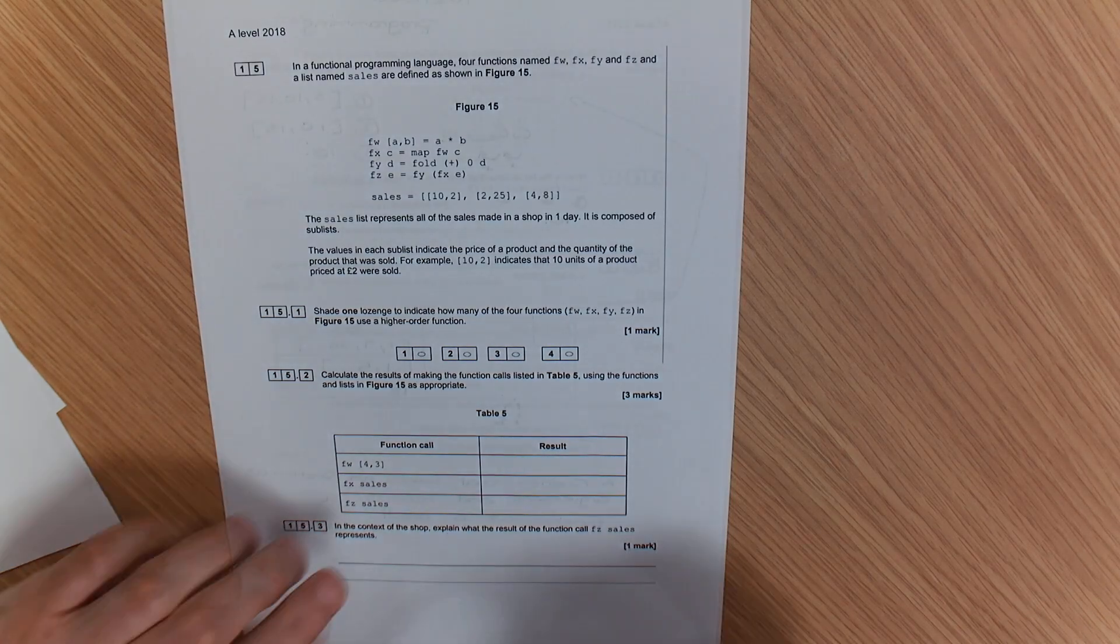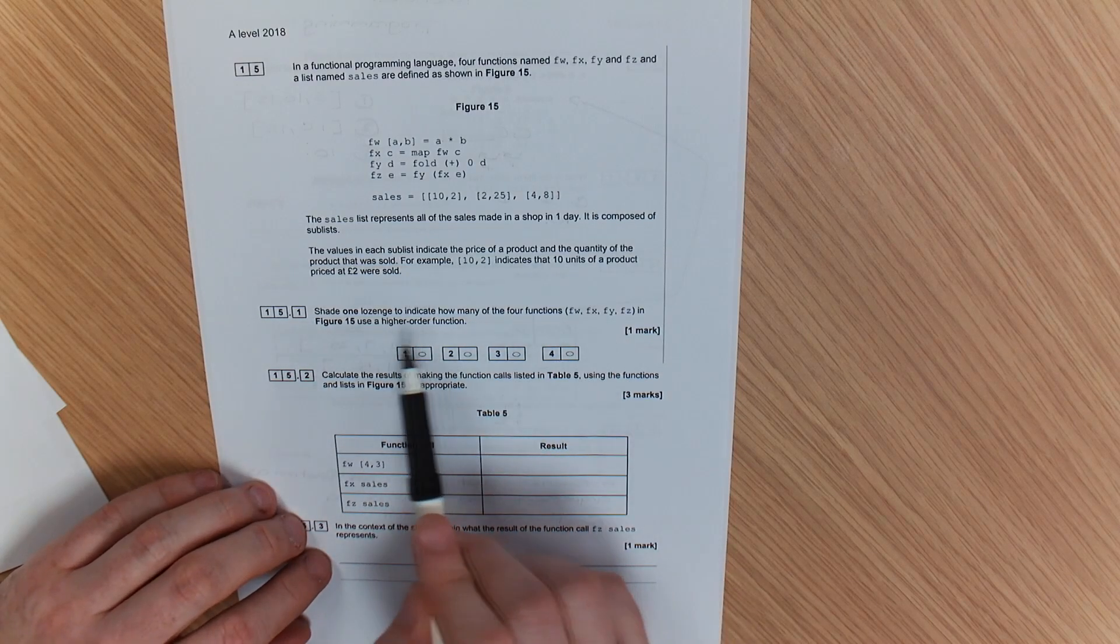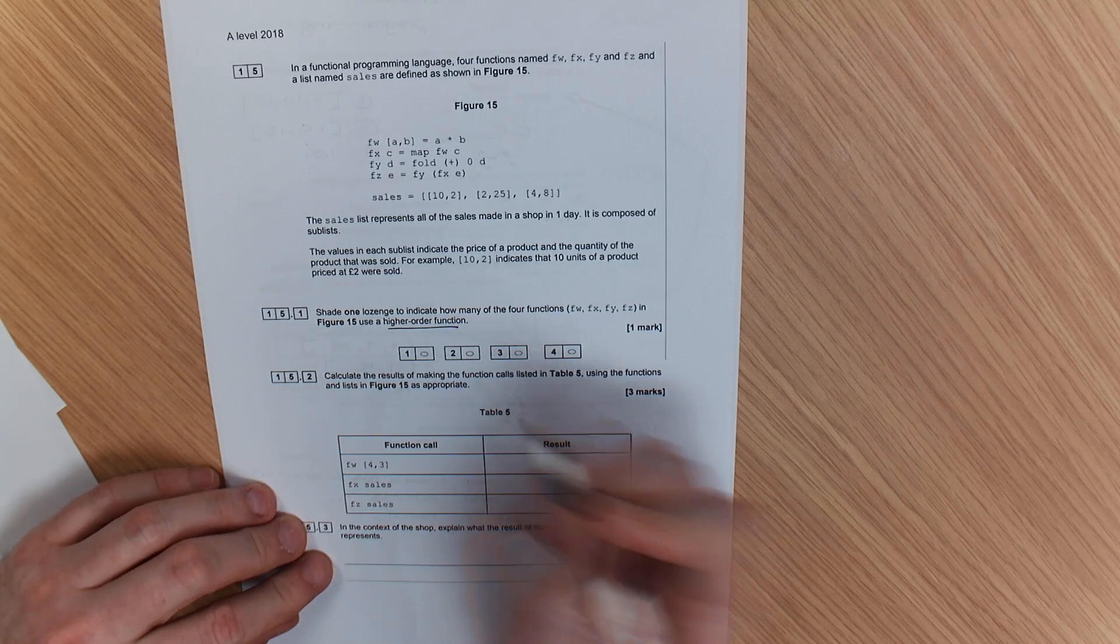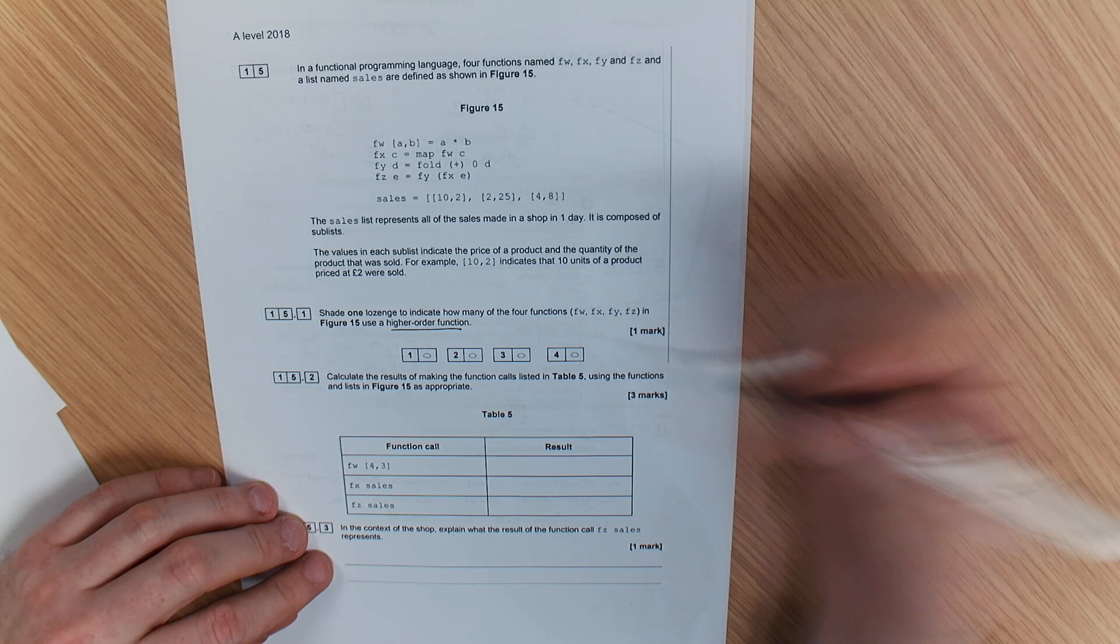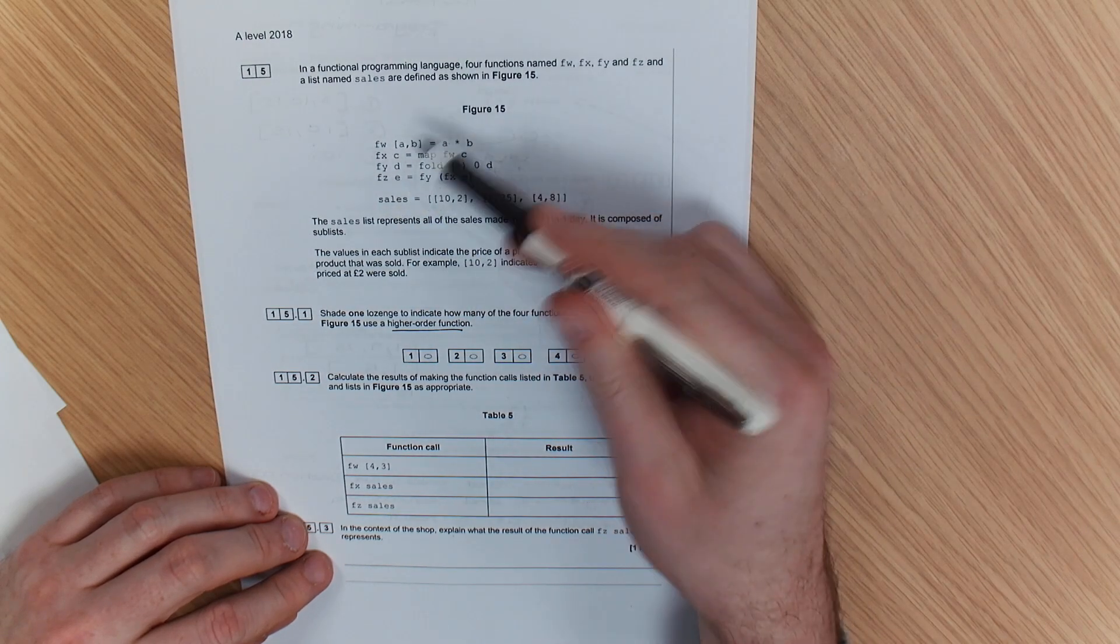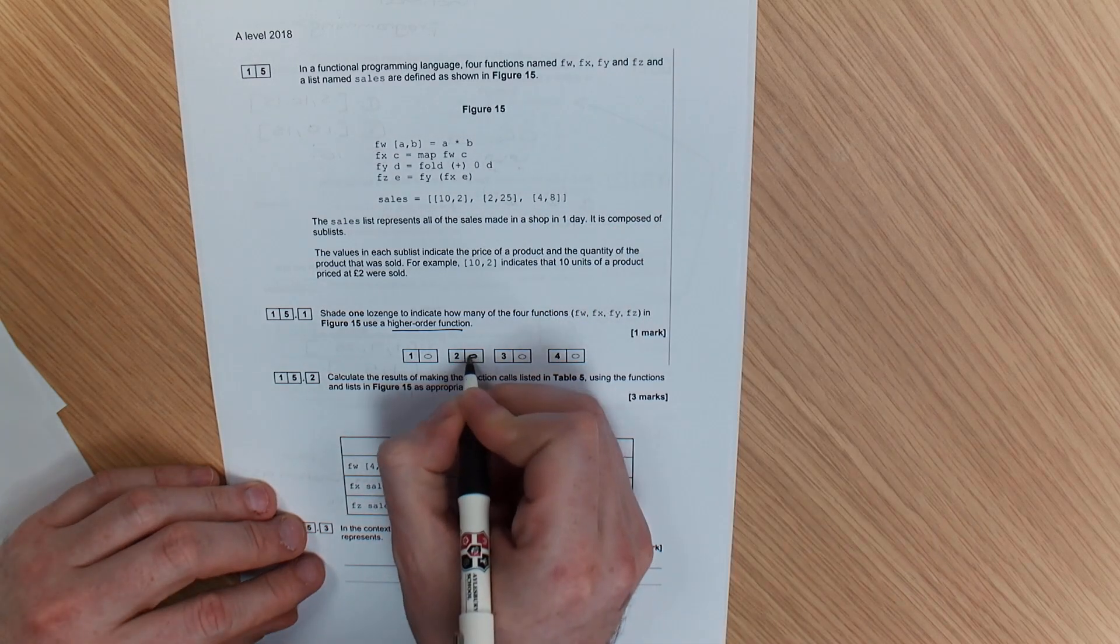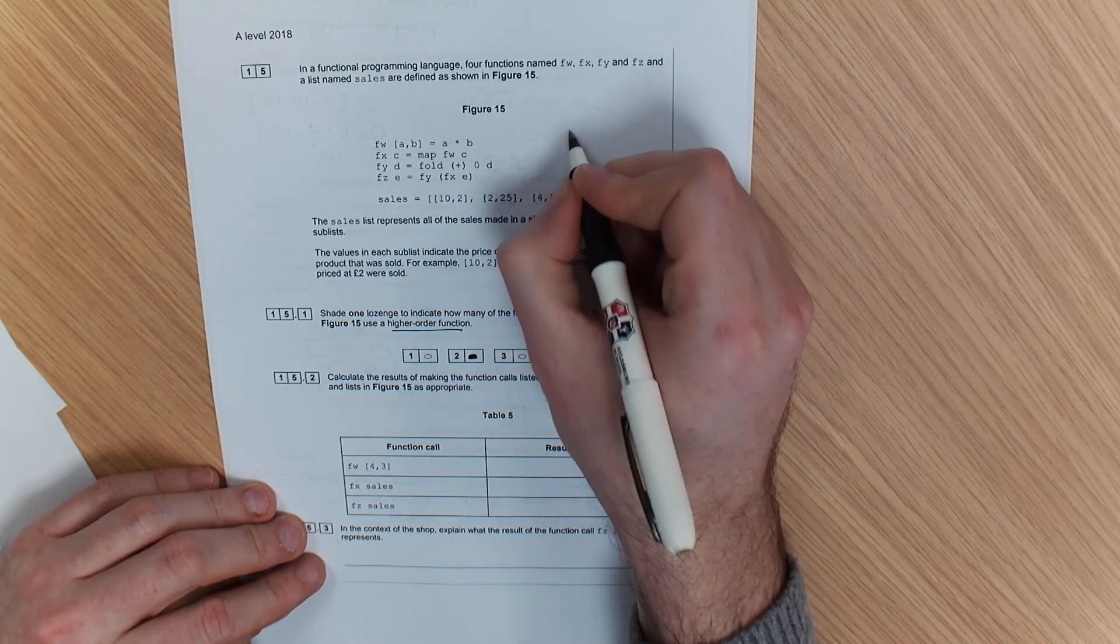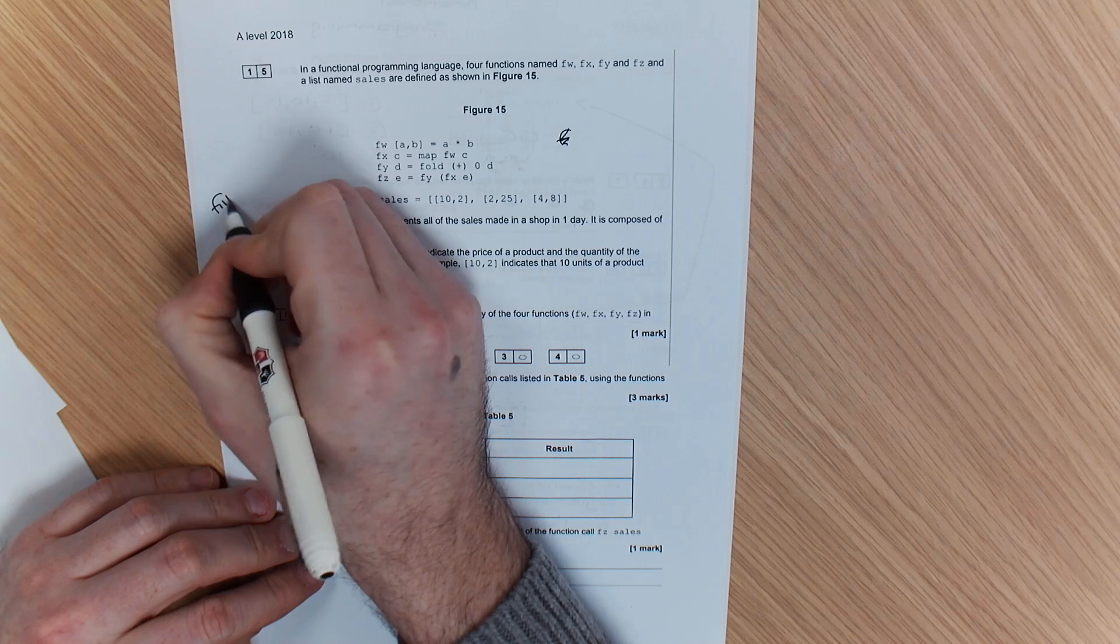Now, the first question's relatively straightforward. It gives you the list of all the functions and it wants to know how many use a higher order function. Now, the best way to spot those is words like map, fold, and filter. Well, in this case, we can see map and fold. We can't see any other higher order functions. So therefore, the answer to that question should be 2. But another that you might see is the word filter.